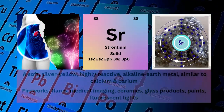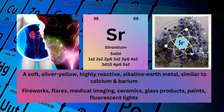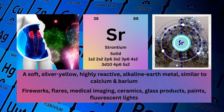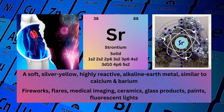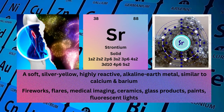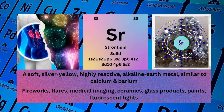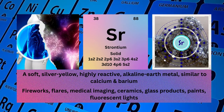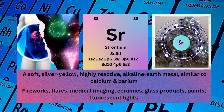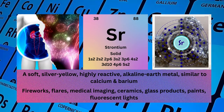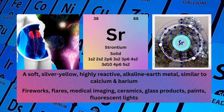Strontium. Atomic number 38. Mass number 88. Symbol SR. State solid. Electronic configuration 1s2 2s2 2p6 3s2 3p6 4s2 3d10 4p6 5s2.